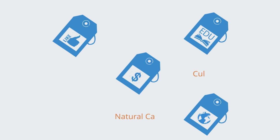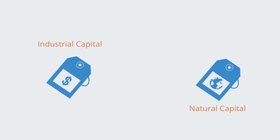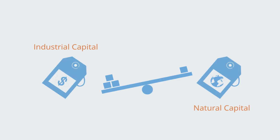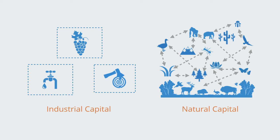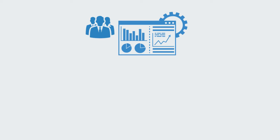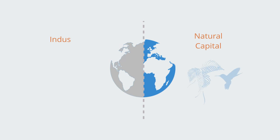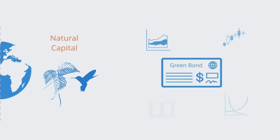Completing the process of industrialization means people's values change subtly but importantly. At this stage in economic development, the scarcity is no longer in technology, capital, and labor — it is increasingly in natural capital. The value shifts from the derivatives of ecosystems to the functional integrity of those ecosystems. This integrity of the ecosystem can't be fully measured in terms of utility; it requires a different kind of capital — what can be called natural capital. This means building a new dimension to the economy: a new value system for quantifying, exchanging, and accounting for natural capital.